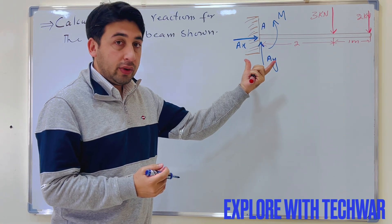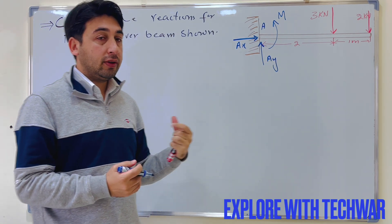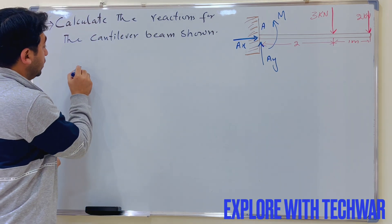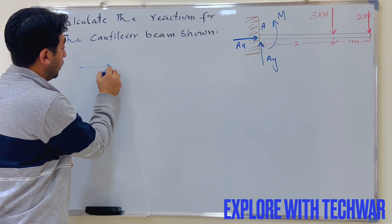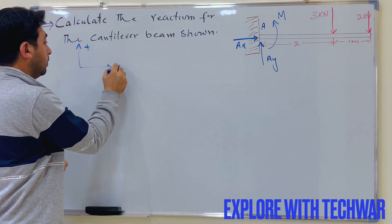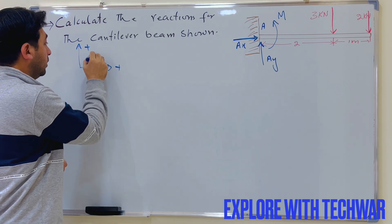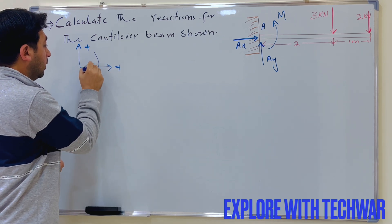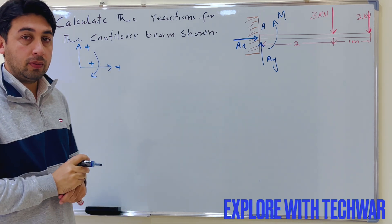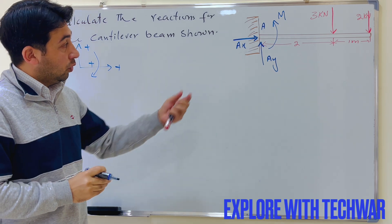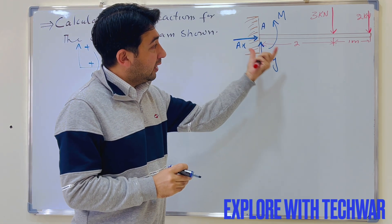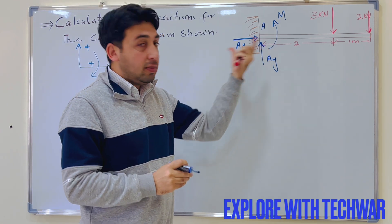Before starting to solve the problem, we have to set our sign convention. For this problem: upward is positive, rightward is positive, and clockwise moment will be positive.